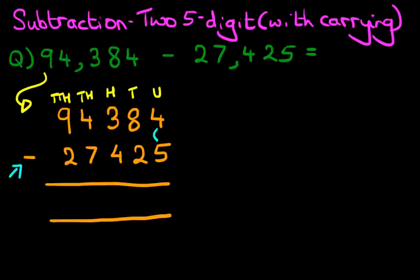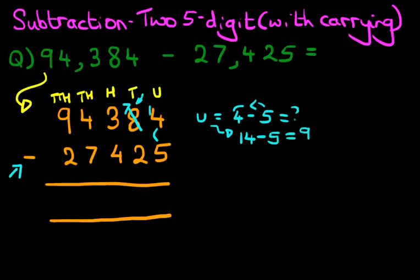Four minus five. Let's do some workings over here. Units: four minus five. Well, we know the number four is less than five, so we cannot do this. We're going to take one from the number to its left. In this case, it's eight. So let's cross out eight. Eight minus one is seven. The one we have taken from here, we're going to add it over here. So the units column has now become 14 minus five. Fourteen minus five is nine.